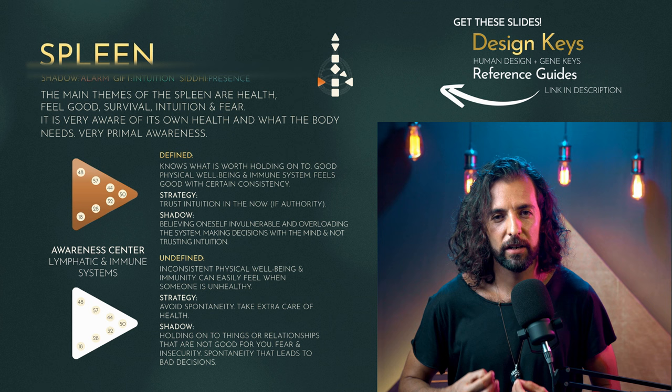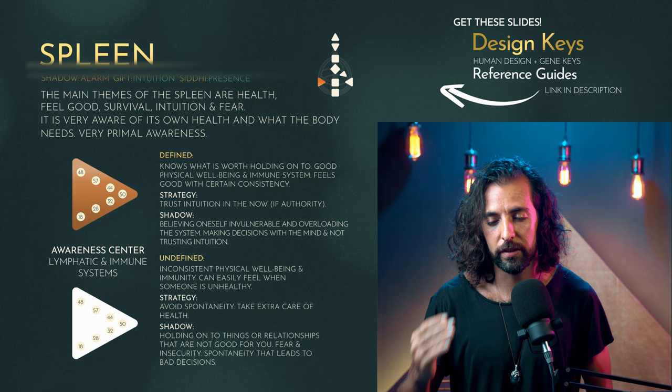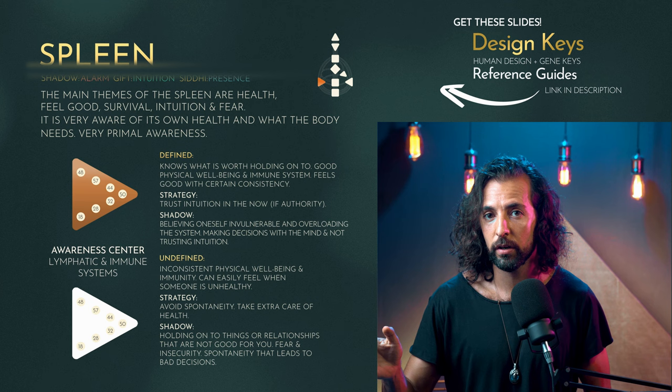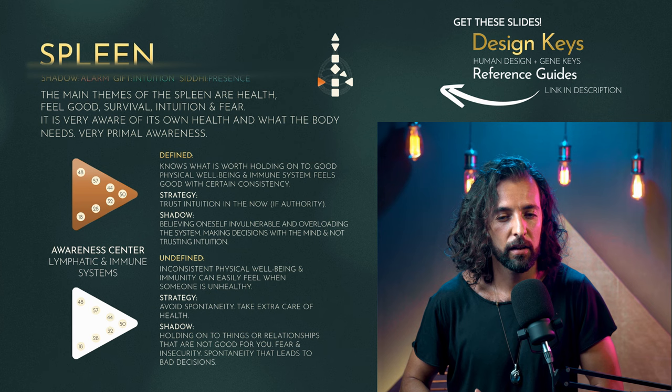The spleen is your basic center of intuition — very primal, non-mental, and embodied. It can tell you yes or no right now in the moment. If you have a defined spleen, you have a very developed intuition: you'll know when entering a place whether there's danger, like a spider sense. The spleen always knows, and if you don't listen, you might get sick, trip, or have an accident. This intelligence tells you right now what you should or shouldn't be doing. It's also connected to your immune system and overall health, and its sensitivity can vary depending on whether it's connected to the sacral, root, or throat.